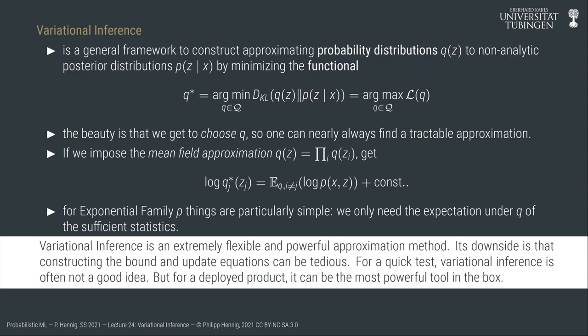This is called variational inference. It is relevant whenever you want to compute an approximate posterior distribution over some quantity z under a generative model p for data x and latent z — when you don't want a point estimate or MCMC, but want an explicit probabilistic representation you can optimize. Optimization tends to be easier than sampling because it converges after a finite number of steps.